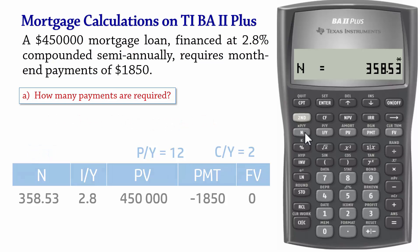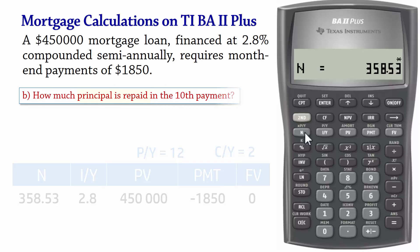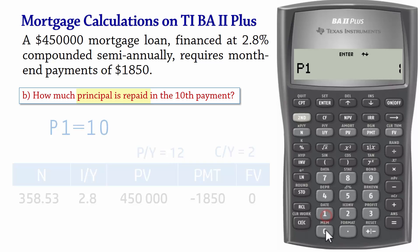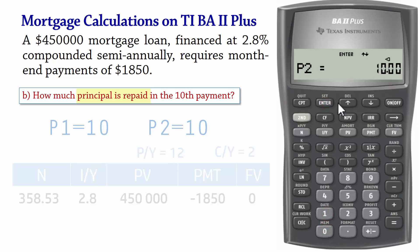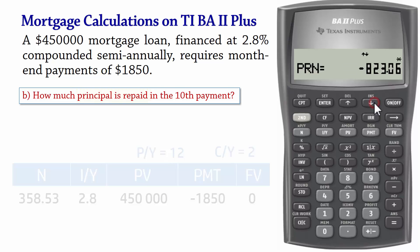To find the principal repaid in the 10th payment, we press 2nd Amort. Set P1 to 10, Enter, scroll down, set P2 to 10 as well, and Enter. When you scroll down, you see the outstanding balance after the 10th payment. Scroll down again and you see the principal repaid in the 10th payment, which is $823.06.